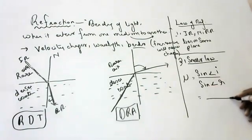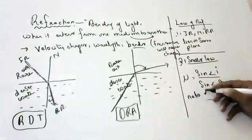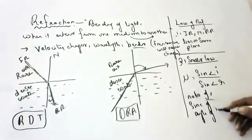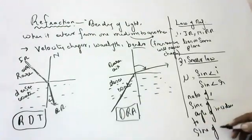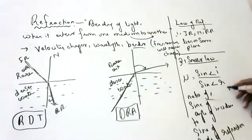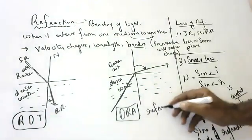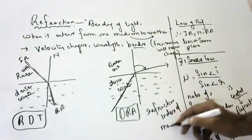Again: ratio of sine of angle of incidence to sine of angle of refraction is constant. That constant is called the refractive index of the medium. The constant is called the refractive index of the medium — very, very important.